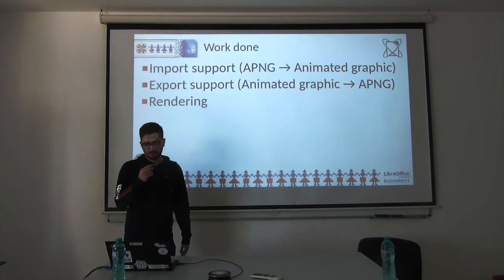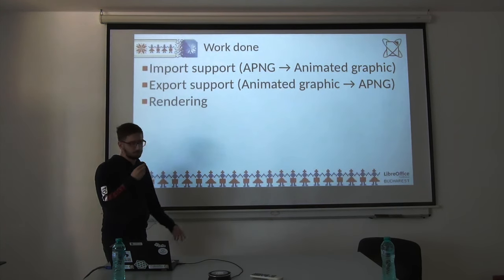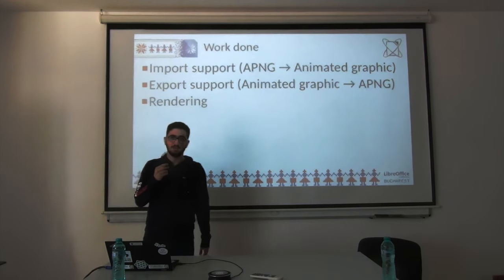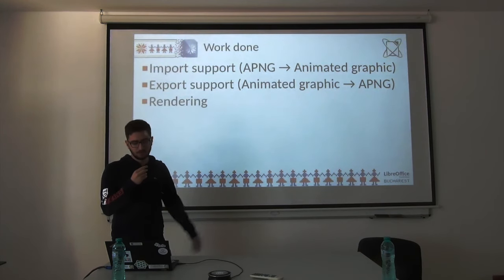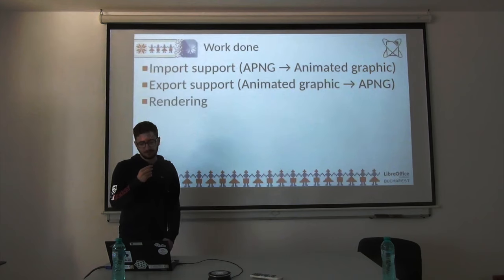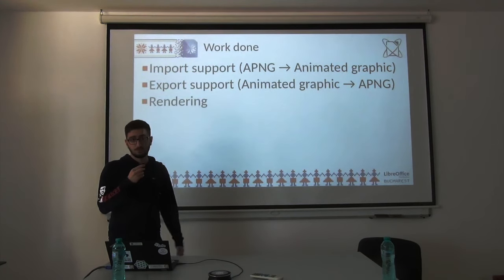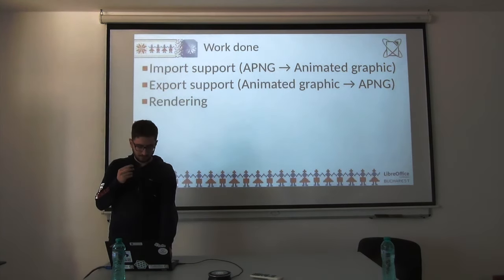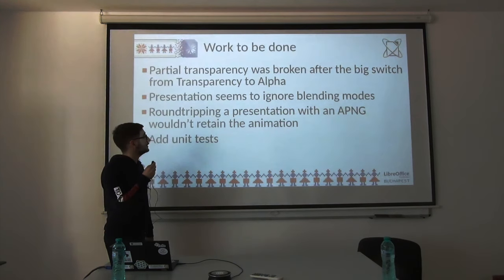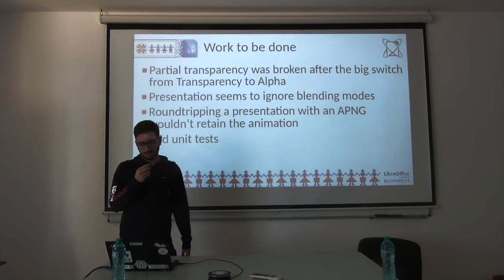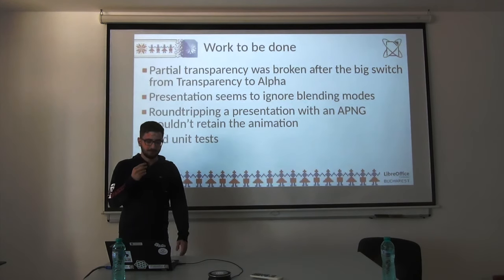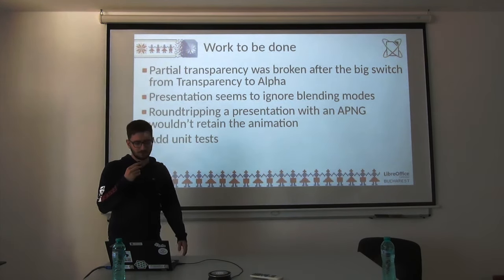The work done for this project was import support — we use the graphic class and animation class in LibreOffice already used by GIFs — and export support. Because it's imported into a GIF structure, there is also support to round-trip from GIF to APNG and back. And also rendering. However, there were some bugs. The first big one that still needs to be fixed is that partial transparency was broken after the big switch from transparency to alpha. There was some work in fixing that, but there's still stuff to do.